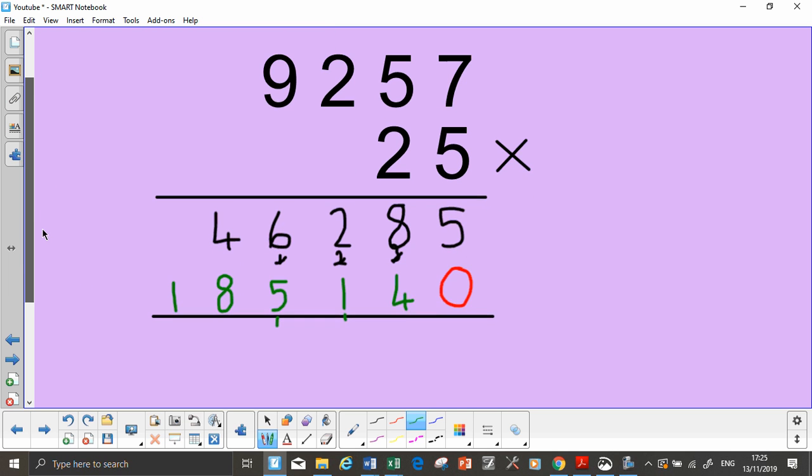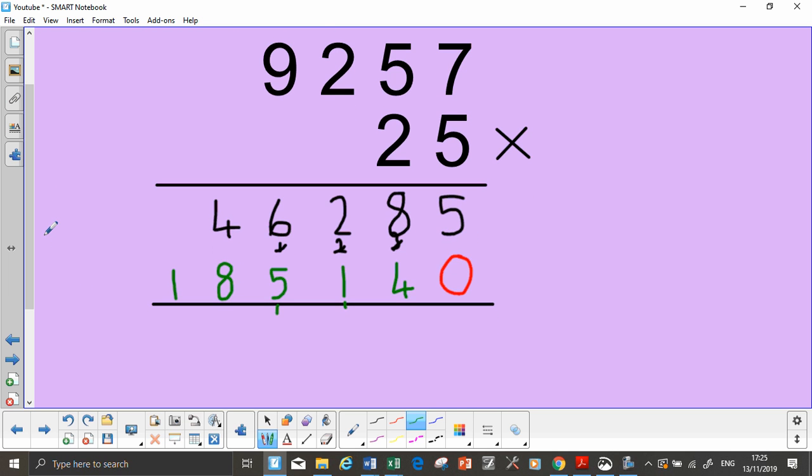Okay, I'm just going to scroll down. So we haven't finished there. We've worked out what 5 times 9,257 is, and we've worked out what 20 times 9,257 is. We need to add them together. So I'm going to add them here.